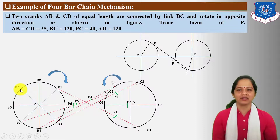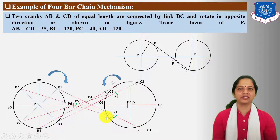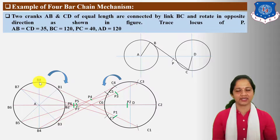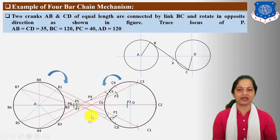Next, take center B7, radius equal to 12 cm, and find out C7 point on this circle. Connect B7C7 and locate P7 locus point on the B7C7 connecting rod. At last, take center B8, radius equal to connecting rod BC 12 cm, and find out C8 on this circle. Connect B8C8 and locate P8 on connecting rod B8C8. The distance of P8 from C point is given 40 mm.